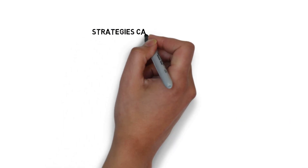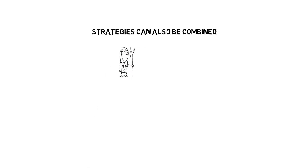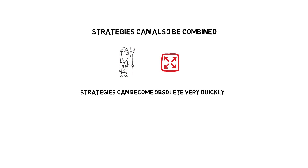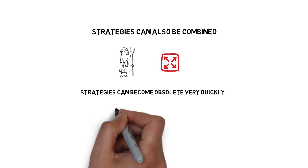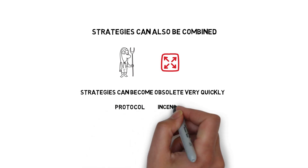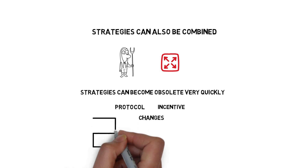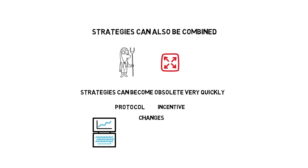Some of these strategies can also be combined, so yield farmers can maximize their returns even further. It's worth keeping in mind that yield farming strategies can become obsolete very quickly — for example, due to protocol or incentive changes — and something that may be super profitable right now may not be profitable at all the next day. So it's important to keep an eye on running strategies and rotate crops if necessary.